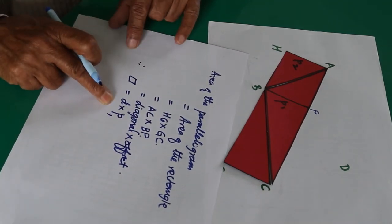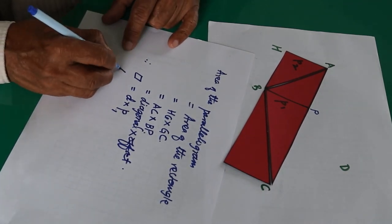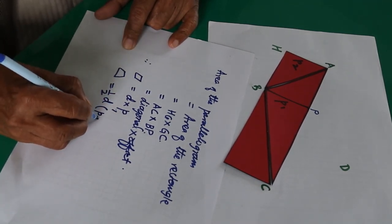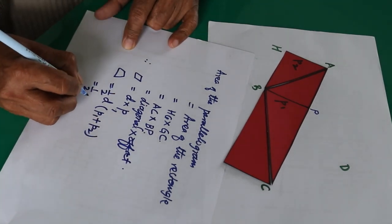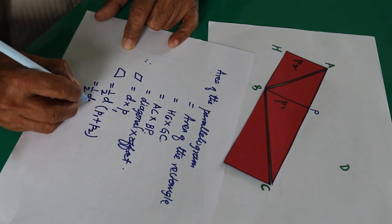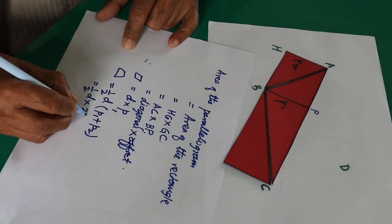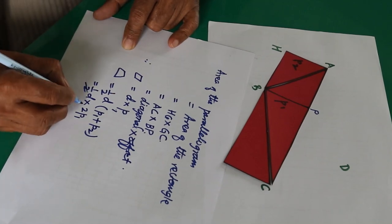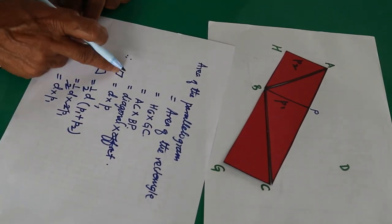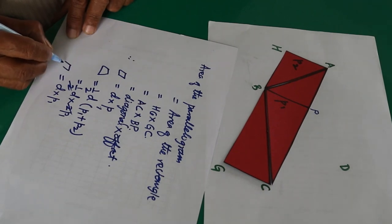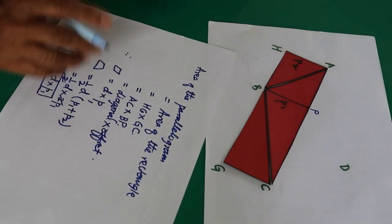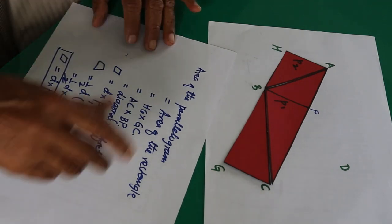Therefore the area of the parallelogram equals diagonal D into offset P1. Is this the same as the formula we derived yesterday? Yesterday the area of the quadrilateral was half the diagonal times the sum of offsets (P1 plus P2). Here the two offsets are equal, so P1 plus P2 equals 2·P1, and the two and the half cancel out, giving D times P1 as another formula for the area of the parallelogram.